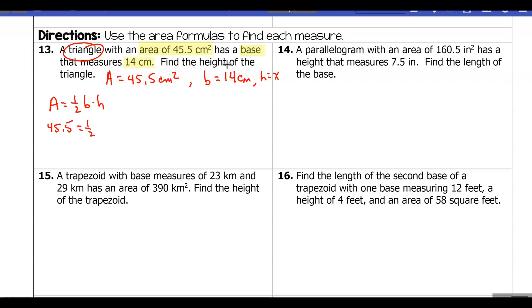and we were given that the base is 14, so let's substitute in the base. We don't know the height—we want to find that. Now all we need to do is solve for h. So I have 45.5 equals one-half times 14, which is 7, so 7h. Then we'll divide both sides